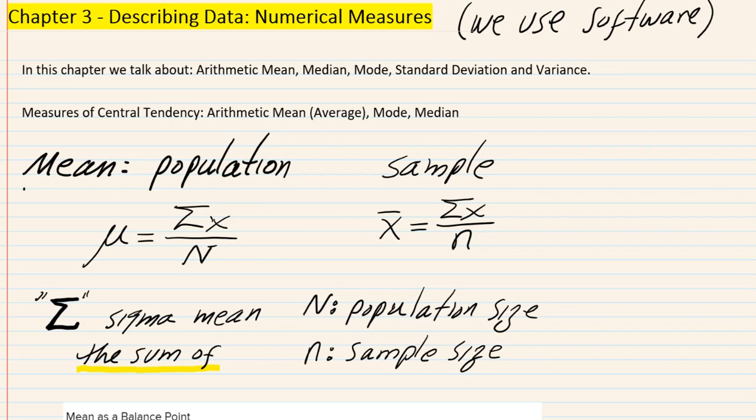In Chapter 3, we're going to look at describing data using numerical measures. Our assumption is that we have genuine quantitative information for which it makes sense to do mathematical computations and arithmetic operations. Things like gender, social security, or student ID are not suitable for what we're doing here. Assuming we have genuine numbers, here is a list of things we would like to do in this chapter.